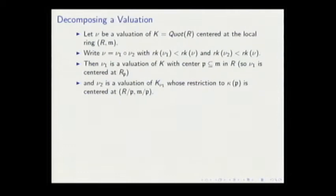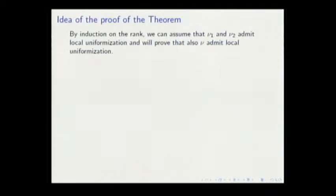What we did: we have valuations ν₁ and ν₂. We assume by induction hypothesis, since they have smaller rank, that they admit local uniformization. The first step is to lift these local uniformizations along ν₁ to blowing ups along ν.